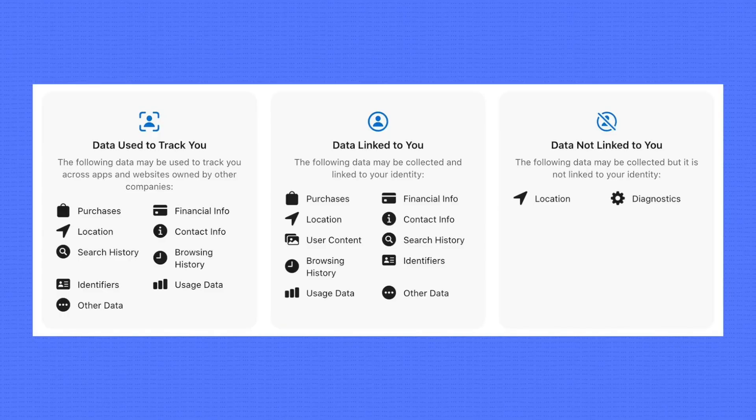When you search for any app, you can look at the details. There are three categories that indicate privacy nutrition labels. One is 'Data Used to Track You,' two is 'Data Linked to You,' and three is 'Data Not Linked to You.' You can check out these three options to see what data is collected by third-party apps.